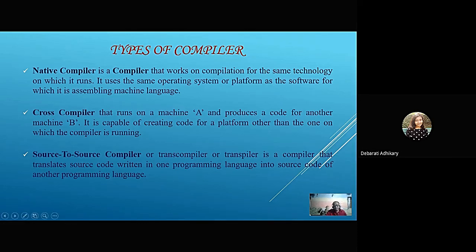Cross compiler runs on machine A and produces code for another machine B. It is capable of creating code for a platform other than the one on which the compiler is running. Source-to-source compiler, transcompiler, or transpiler is a compiler that translates source code written in one programming language into source code of another programming language.